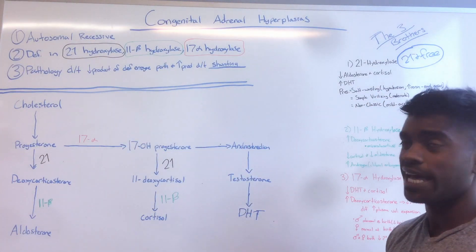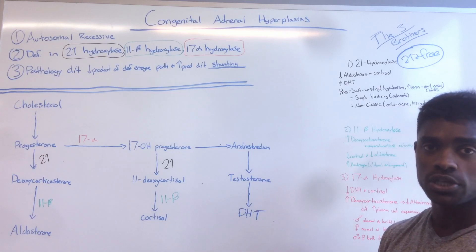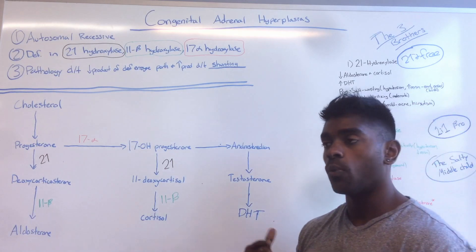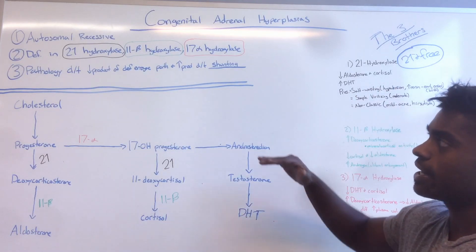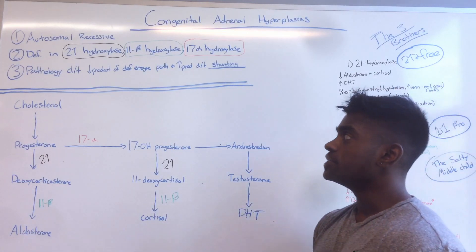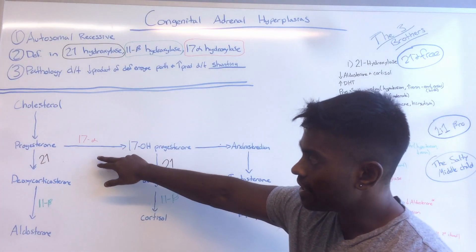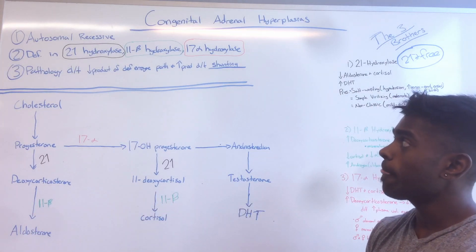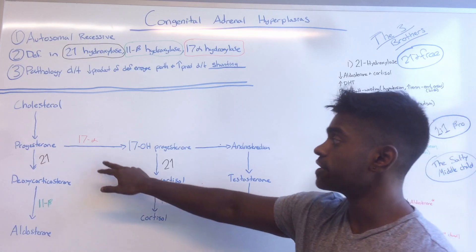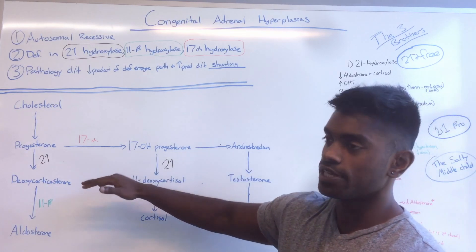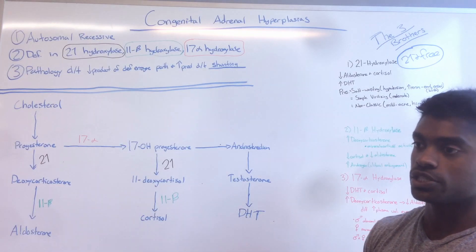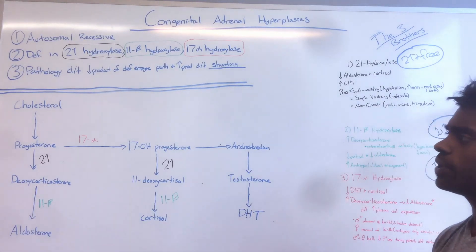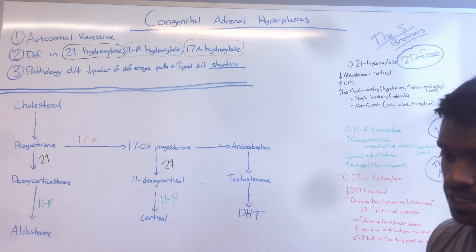The second thing is they can be broken down into three main deficiencies: 21-hydroxylase, 11-beta-hydroxylase, and 17-alpha-hydroxylase. What we have to understand is that the principle behind all these deficiencies is that the pathology occurs due to a decrease in product within the enzyme pathway where the deficiency occurs, and there's an increase in product due to the deficiency of the enzyme in that pathway. If we go through examples, we can make some sense out of all this.